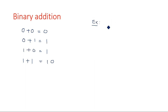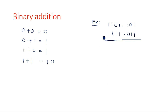For example, adding two numbers: 1 1 0 1 dot 1 0 1 and 1 1 1 dot 0 1 1. In binary addition, 1 plus 1 is not 2 — it gives 0 with a carry of 1, which is added to the next column. So 1 plus 0 is 1, and again 1 plus 1 gives 0 with carry 1.